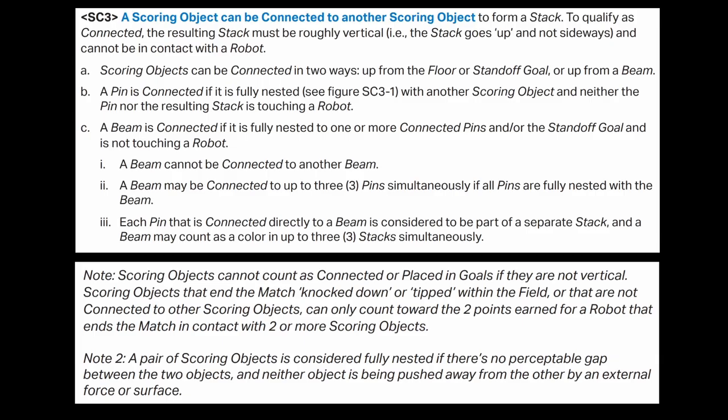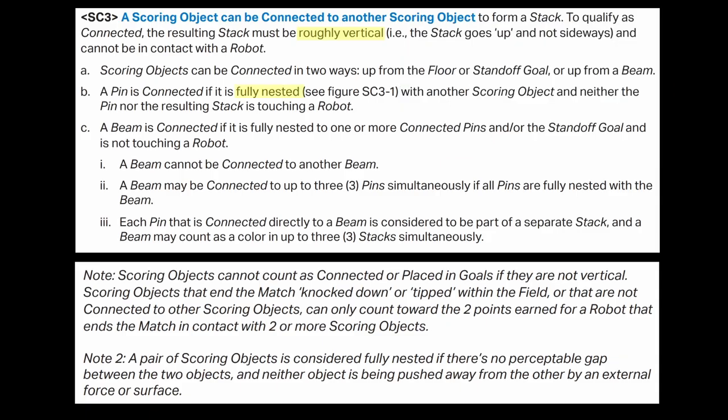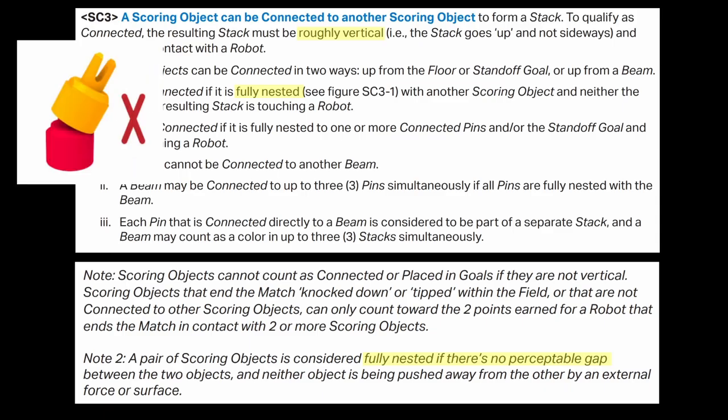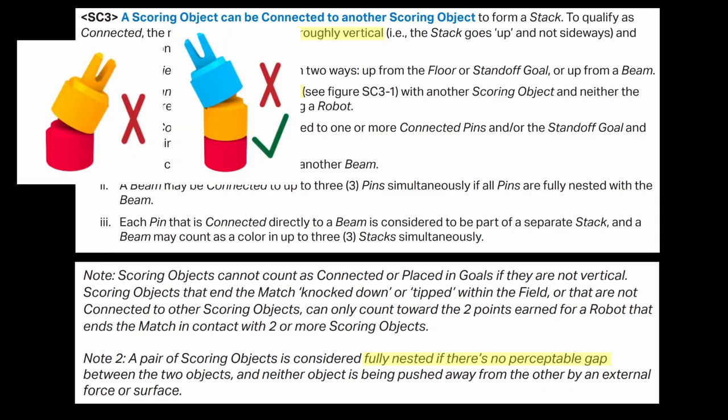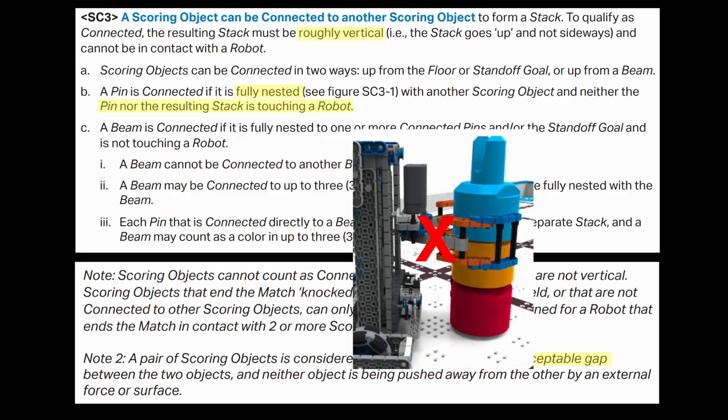Let's touch briefly on the detailed requirements for what's a valid stack and what isn't. First, it must be roughly vertical. So these tipped-over objects are worth nothing. Second, it must be fully nested with no perceptible gap between objects. So these two are not a stack. While the orange and the red here are a stack, but the blue doesn't count as being part of the stack as there's a perceptible gap there. Lastly, it's not a stack if any part of the stack is touching a robot in any way. So none of these pins count as being a stack.